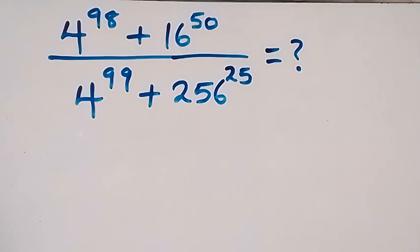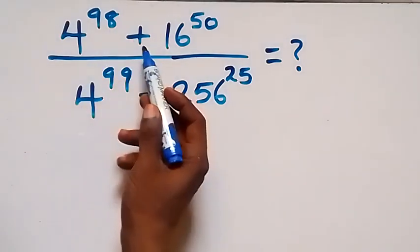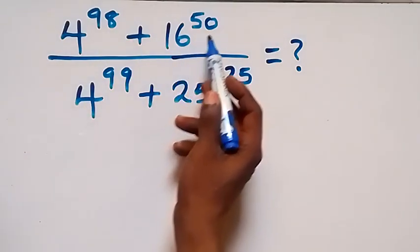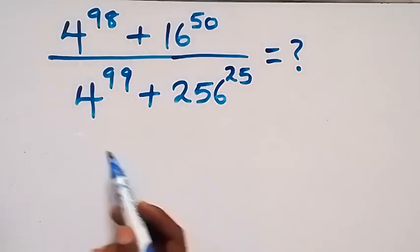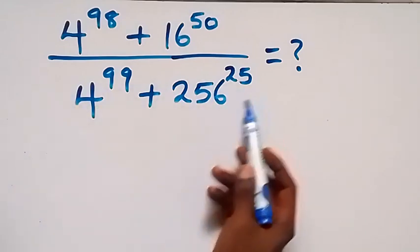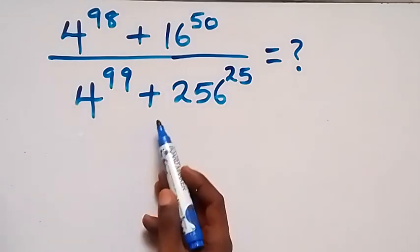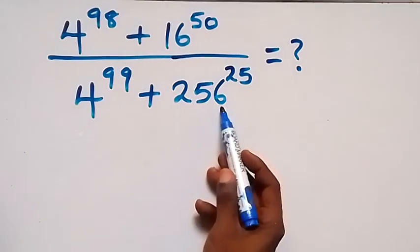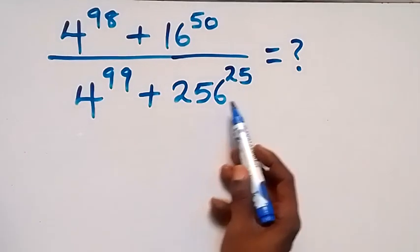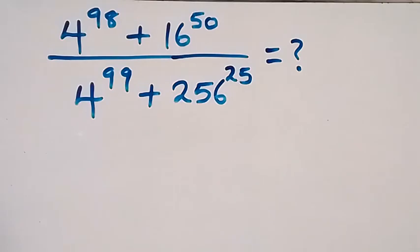We have 4 raised to power 98 plus 16 raised to power 50, divided by 4 raised to power 99 plus 256 raised to power 25.